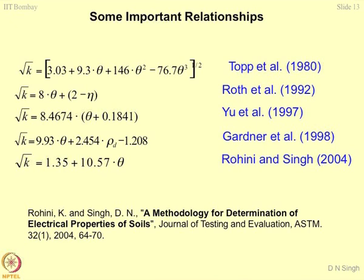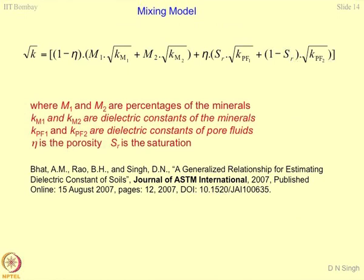All these equations are valid for single-phase minerals. But when you talk about multiphase minerals, what happens? This is where we talk about mixing models. Certain weightage is given to each mineral of known dielectric constant. If you know the phases of the minerals present in the soils — defined as M1 and M2, for example 80% quartz and 20% illite — and if you know the dielectric constants of these minerals, K_M1 and K_M2, we can proceed.